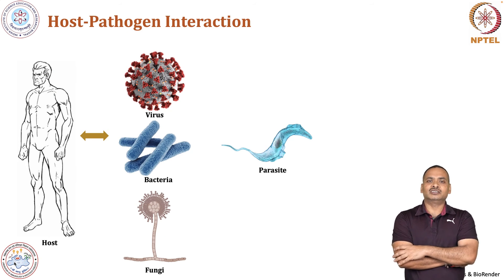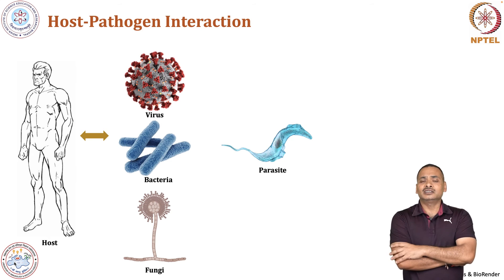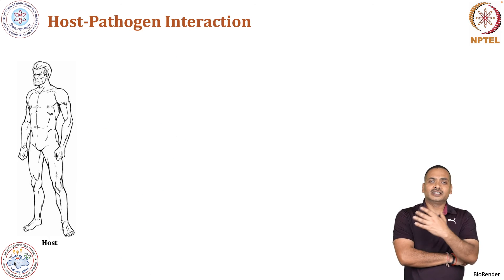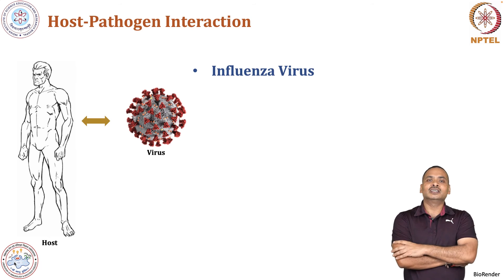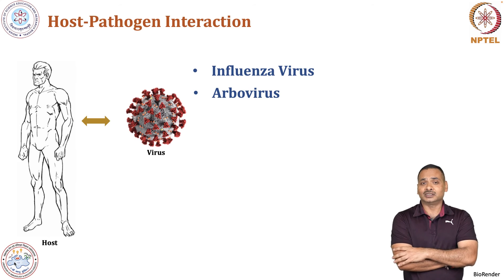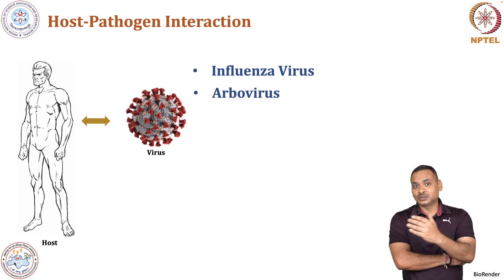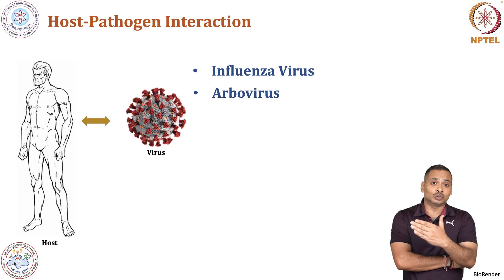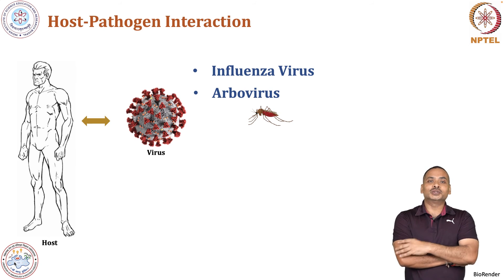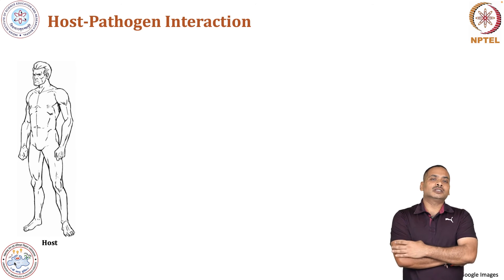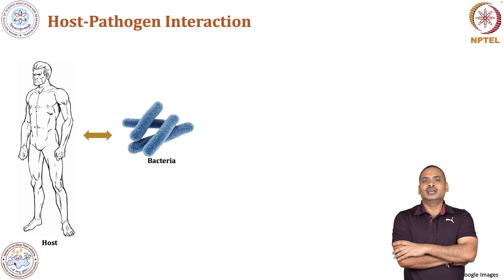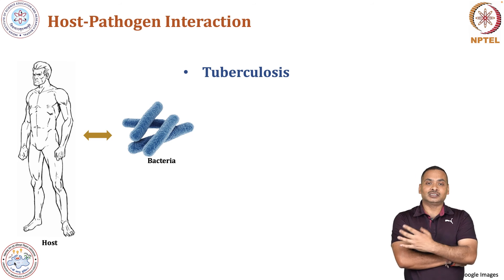Finally, we will move to the host-pathogen interaction. The pathogens are viruses, bacteria, fungi, and parasites. In host-virus interaction, we will look at influenza virus and also discuss about the arboviruses — viruses which are transported through arthropods such as mosquitoes. These cause various diseases caused by dengue virus and Zika virus. We will discuss about host-bacteria interaction and will take up tuberculosis as a model disease.